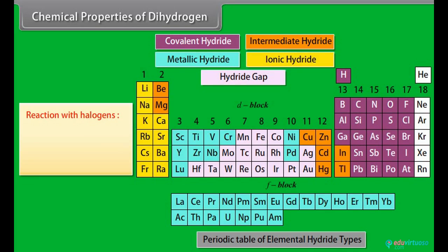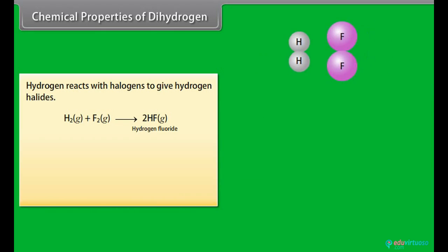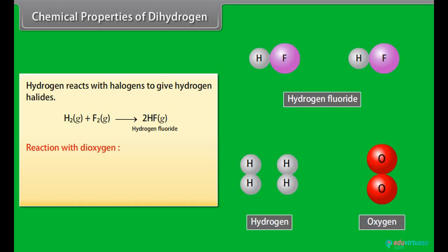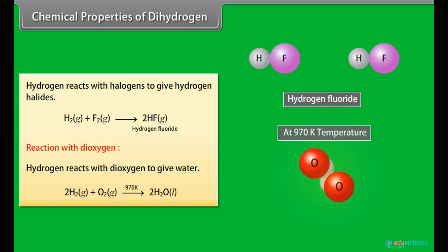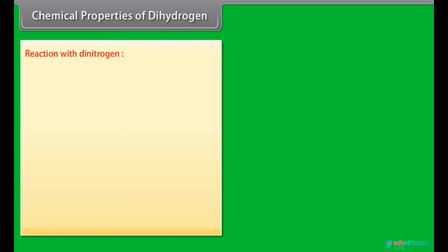Chemical properties of dihydrogen - Reaction with halogens: The reactivity of halogens with hydrogen is fluorine greater than chlorine, greater than bromine, greater than iodine. Hydrogen reacts with halogens to give hydrogen halides. Reaction with dioxygen: Hydrogen reacts with dioxygen to give water.